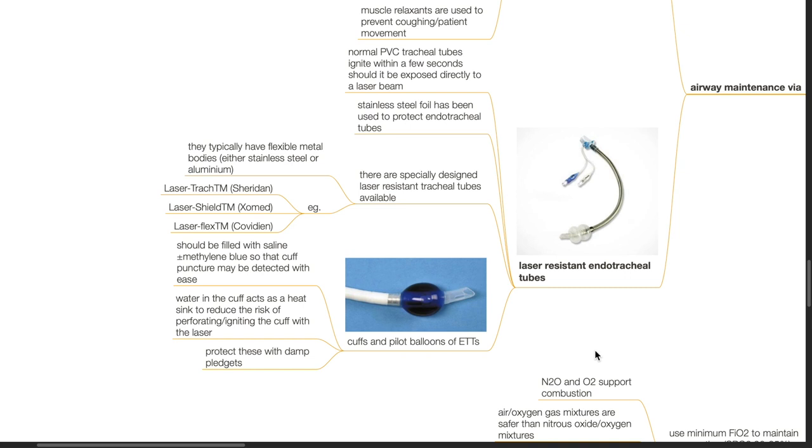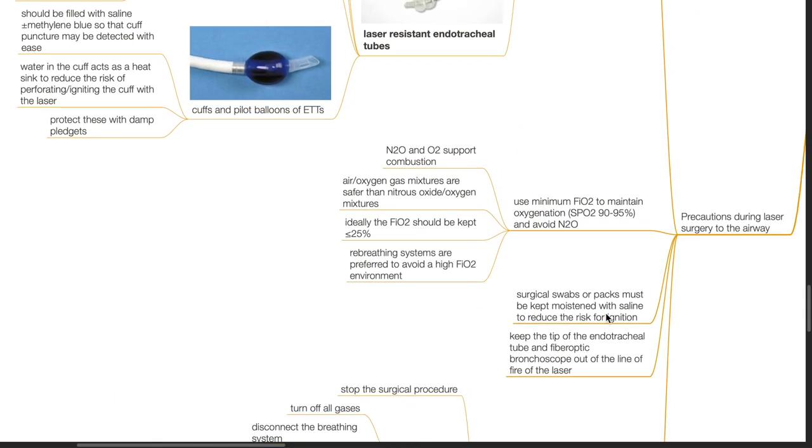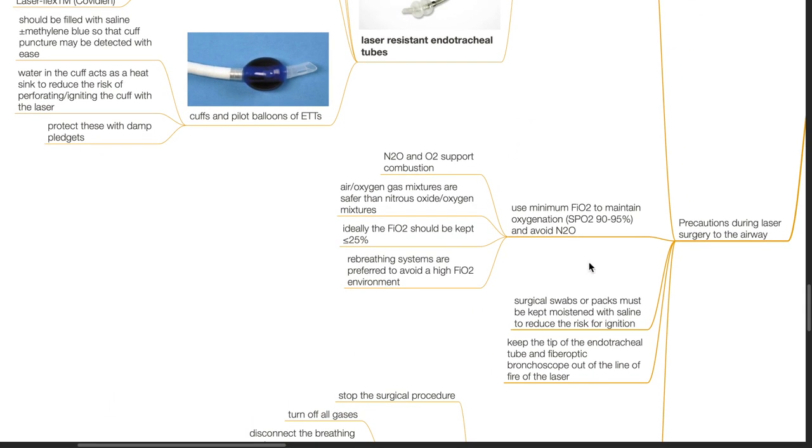Water in the cuff acts as a heat sink to reduce the risk of perforating or igniting the cuff with the laser. Protect these with damp pledgets. Some tube designs have double endotracheal tube cuffs so that if one is punctured, the second one is still functional. Use minimal FiO2 to maintain oxygenation at a SpO2 of 90-95% and avoid nitrous oxide. Nitrous oxide and oxygen support combustion. Air-oxygen gas mixtures are safer than nitrous oxide-oxygen mixture. Ideally, the FiO2 should be kept 25% and below.